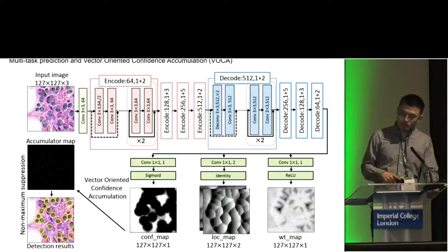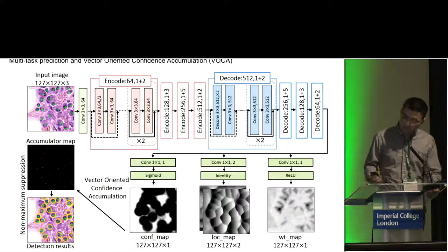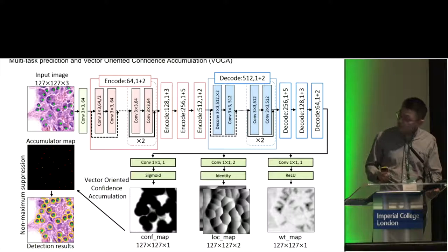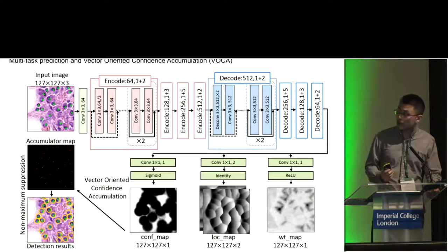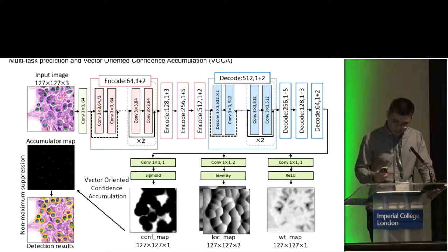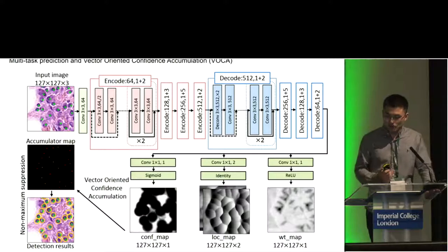To solve these problems, we proposed a method using an encoder-decoder architecture where every block is a residual block, and we output three maps. One gives the confidence of being a cell, the other predicts a vector that moves those confidence values to their target location, which ideally should be the ground truth coordinates.